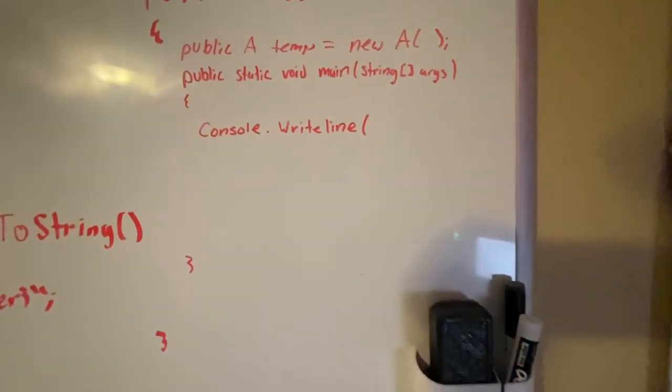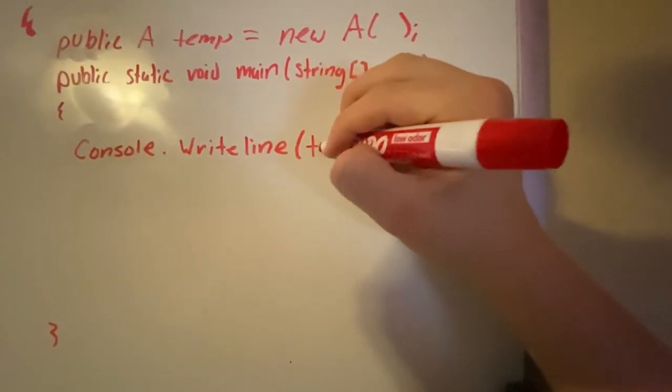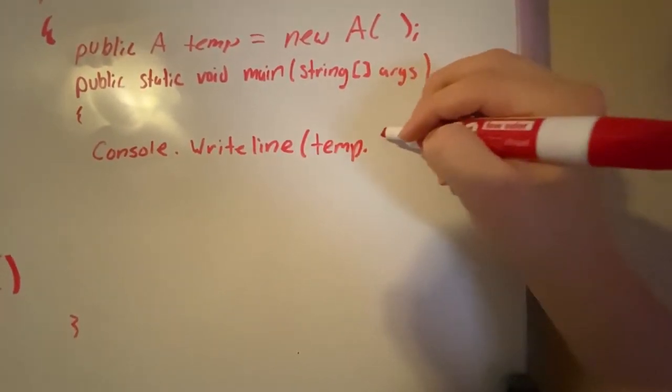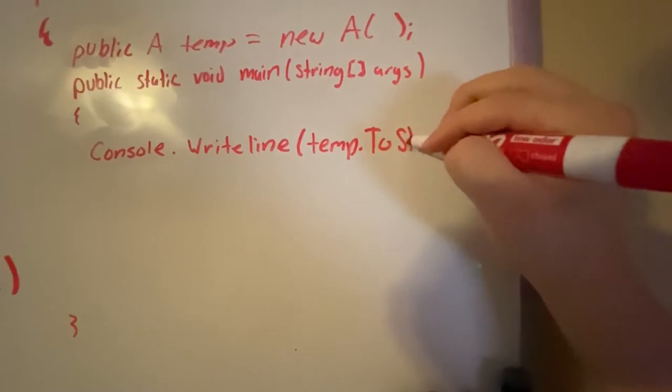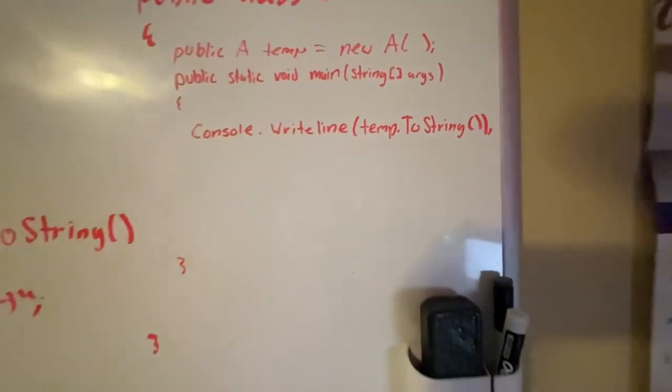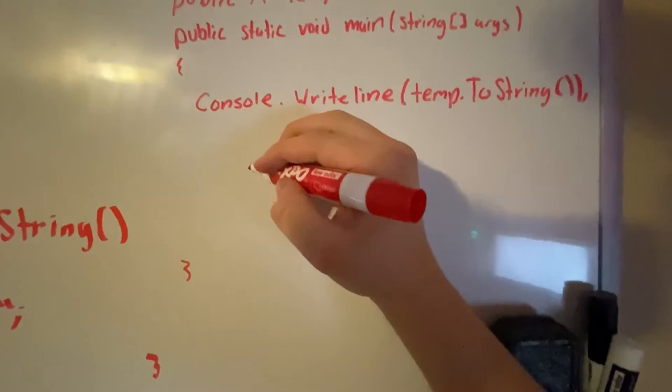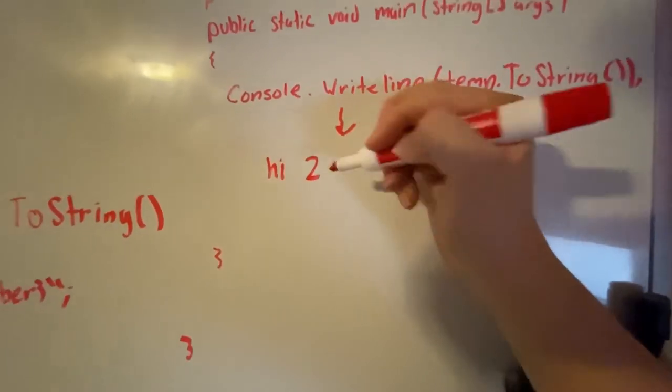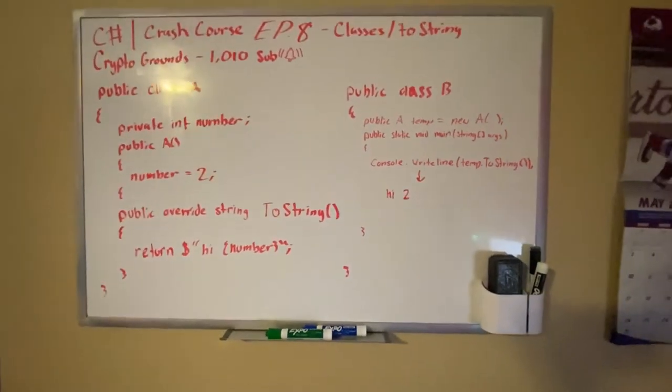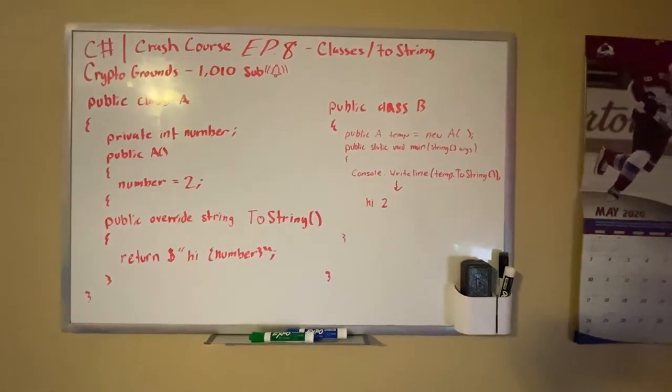We can simply do temp.ToString. Pretty cool. And now when you start your code, it will print out "hi two", "hi space two". That is it. That is how you override the ToString method in your class.